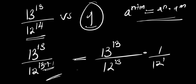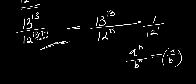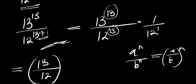This is how we can express it using that identity. Next, using the identity a^n divided by b^n equals (a/b)^n, since we have 13 and 13 as matching exponents, we can write this as (13/12)^13 multiplied by 1 divided by 12.